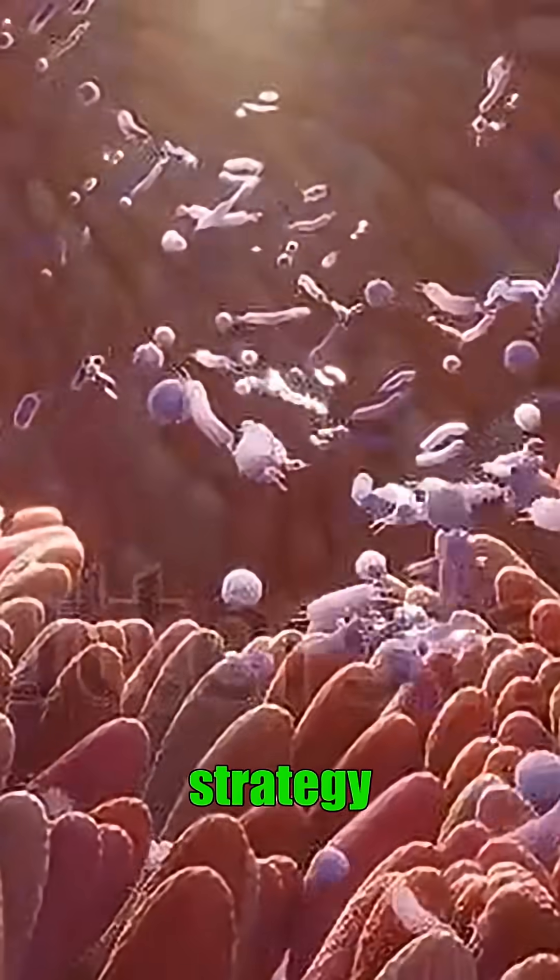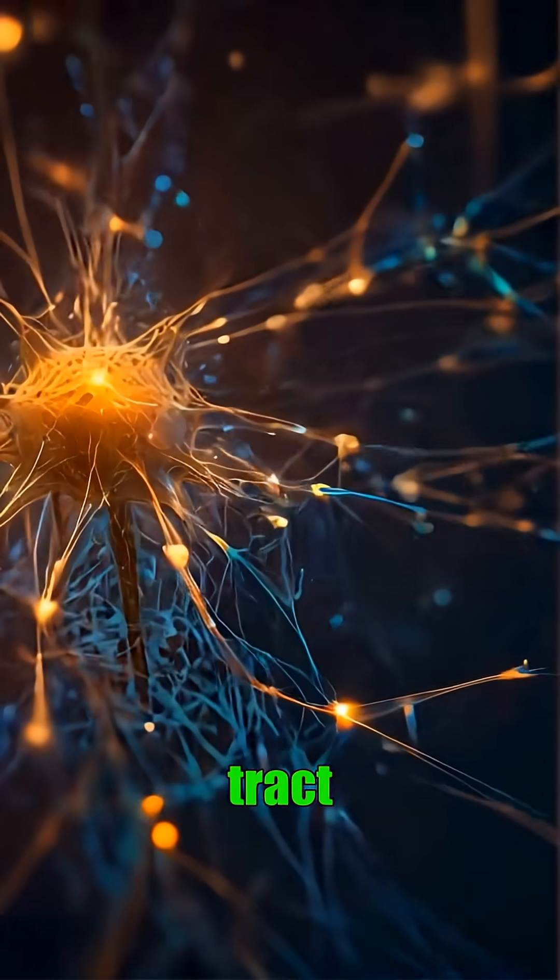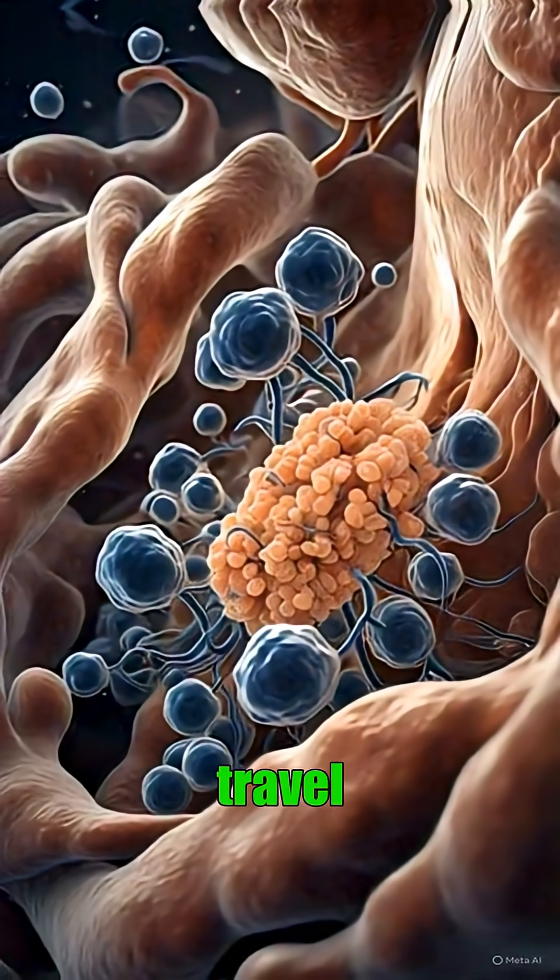The virus's complex strategy is to infect nerve cells, hijack their internal dynein motor track system, and slowly travel toward the brain.